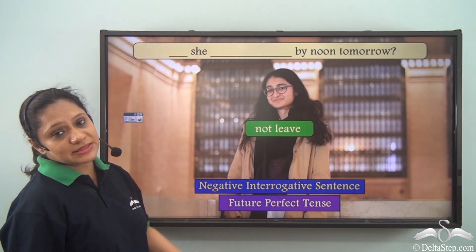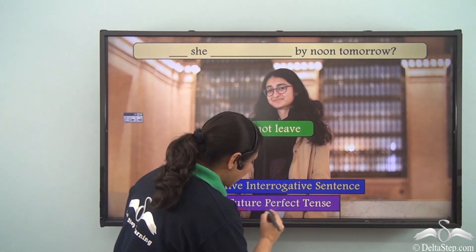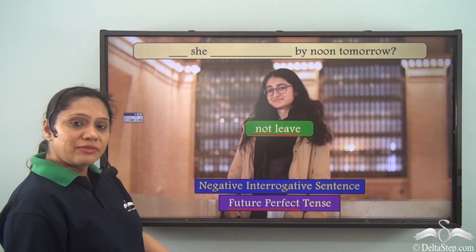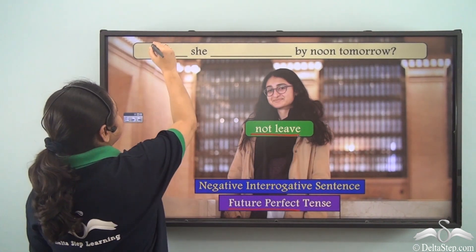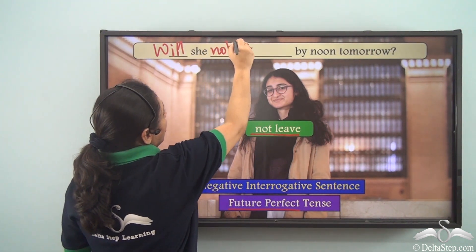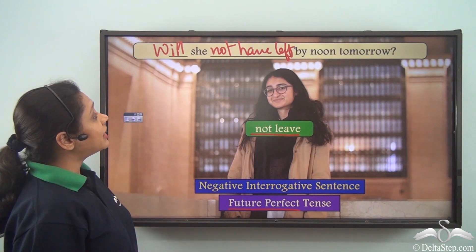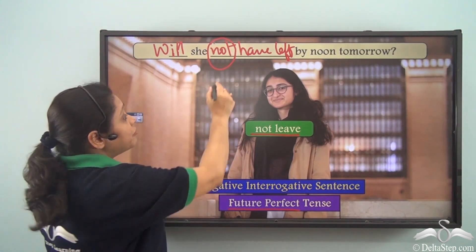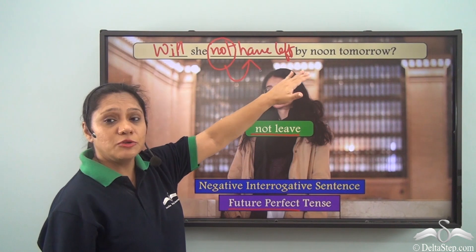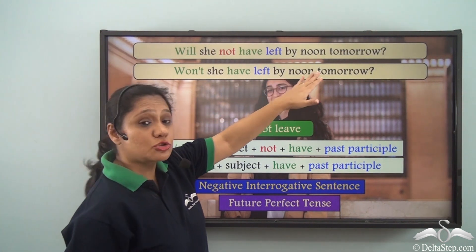Now for a sentence that has to be a negative interrogative portraying the future perfect tense, with the verb 'not leave', we will write: Will she not have left by noon tomorrow? We have included the negative word before the second auxiliary verb. Or we can write the contracted form: Won't she have left by noon tomorrow? 'Won't' is the contracted form of 'will not'.